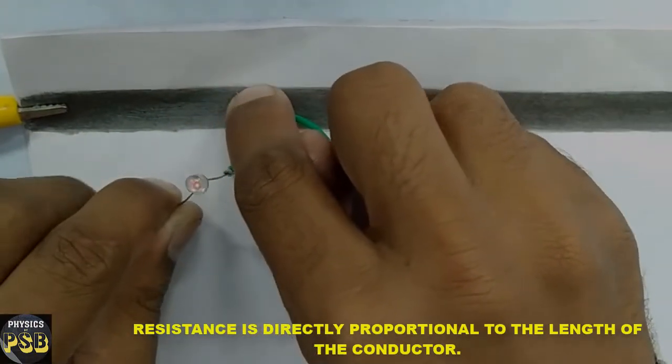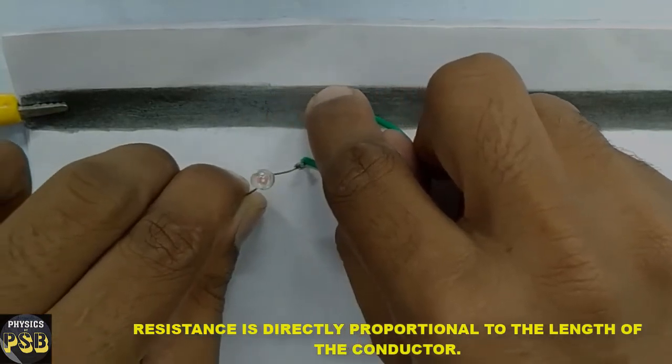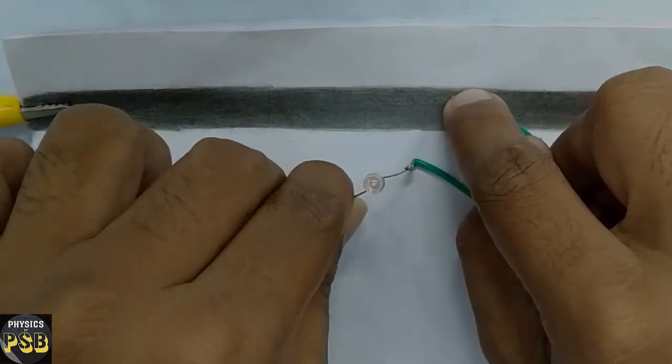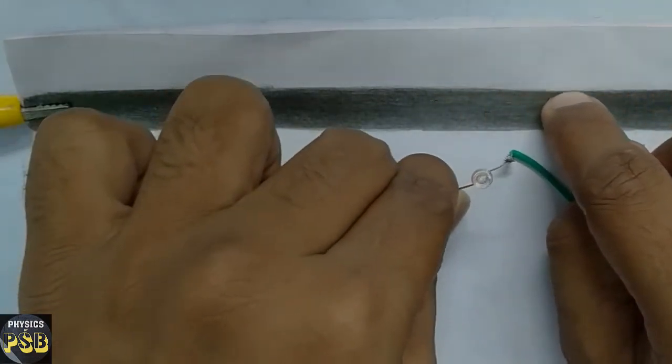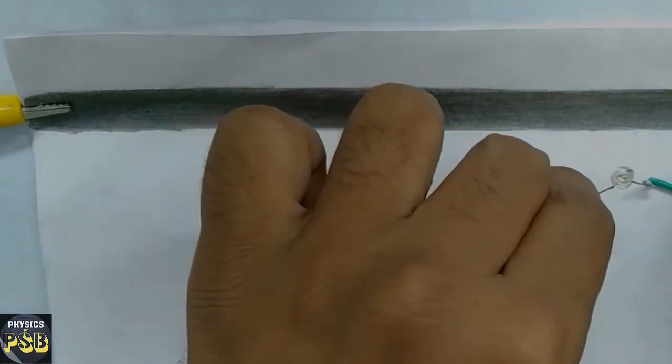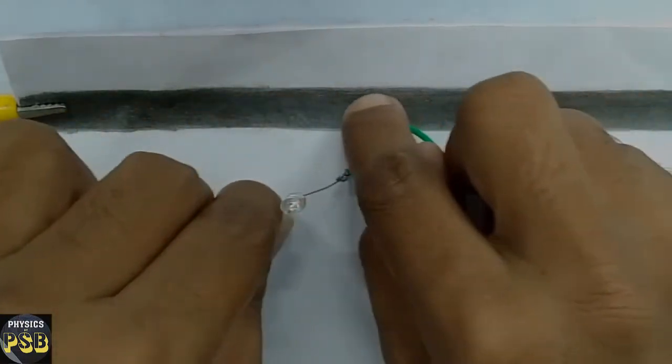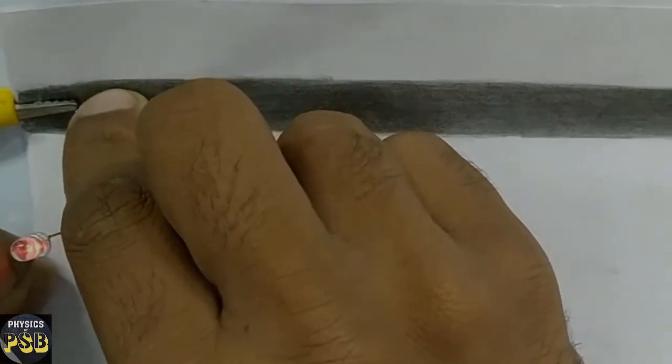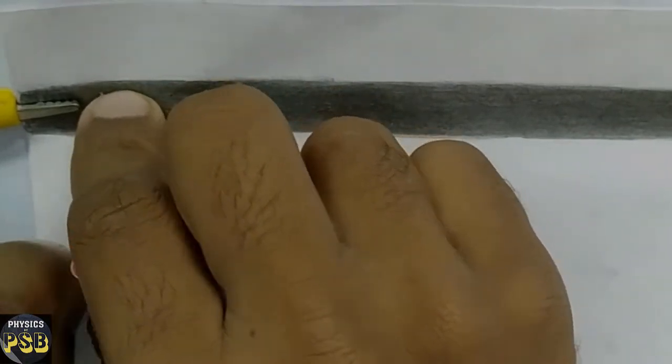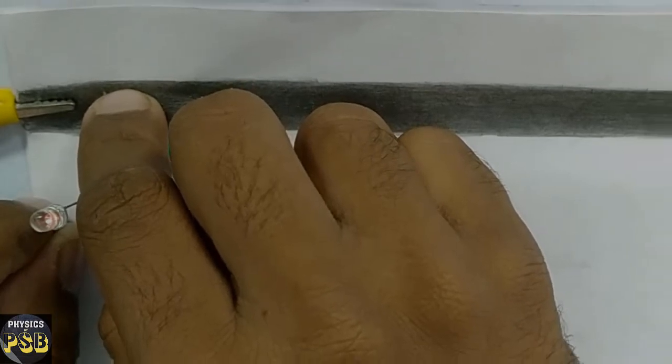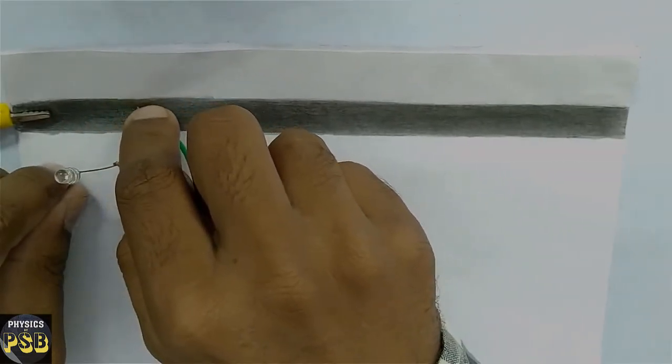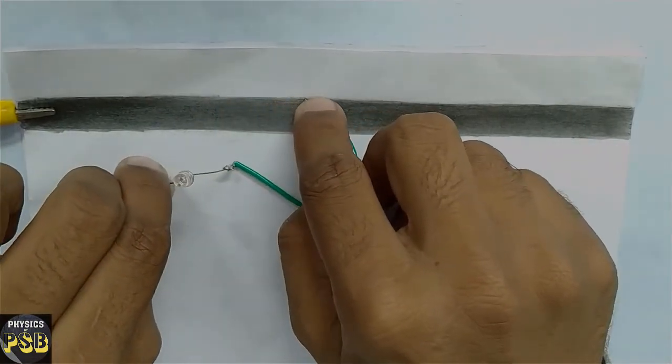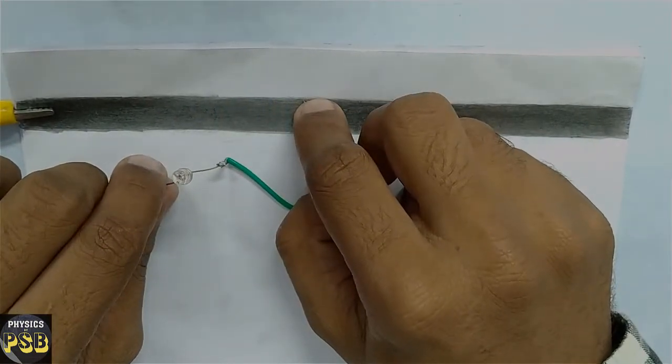This is due to the increase in resistance offered by this carbon track. Now when I come close, the resistance decreases and the brightness of the LED increases. When I move away, the brightness decreases.